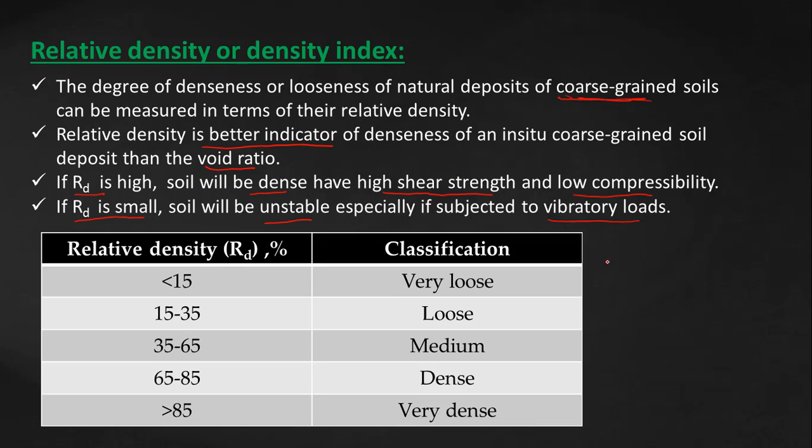So relative density has an empirical formula: Rd equals emax minus e by emax minus emin.